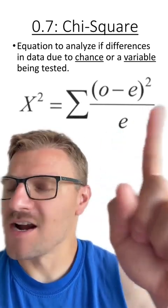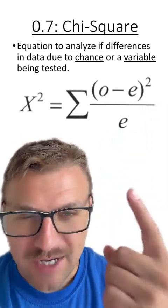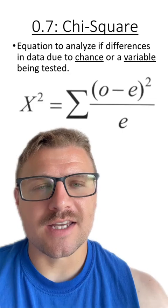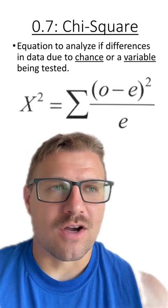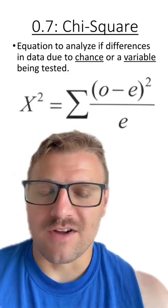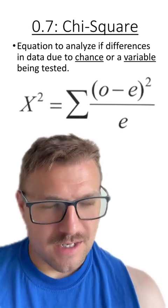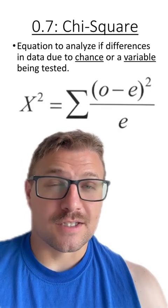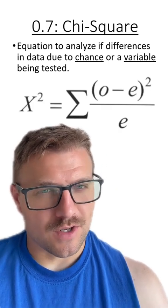First of all, don't get scared by this equation. Once you practice with this a couple times, it becomes a lot easier. The chi-square is the equation to analyze if the differences in data are due to chance or a variable being tested. Another way of saying this is the chi-square analyzes the expected results with the observed results.